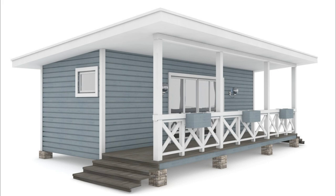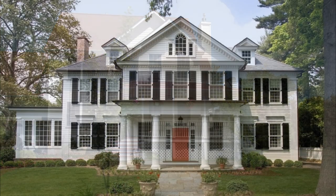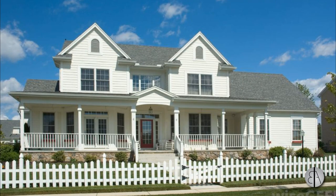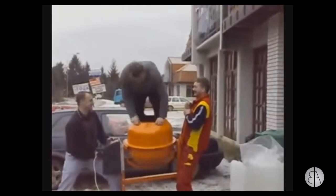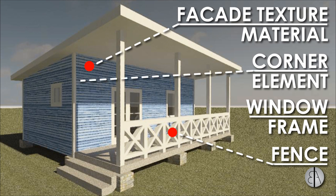Hey guys, this is the Balkan Architect and in this tutorial I'll show you a bunch of tips and tricks on how to create a house in Revit that looks like this American traditional style wood framing house. I'm from Eastern Europe so we have a bit different method of constructing buildings. I'll show you how to create columns on the porch, the railing, the wall material for a wooden facade effect, corner elements, and doors and windows with a white wood outline.